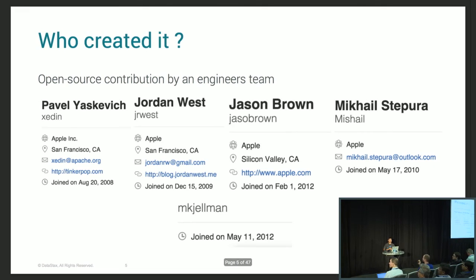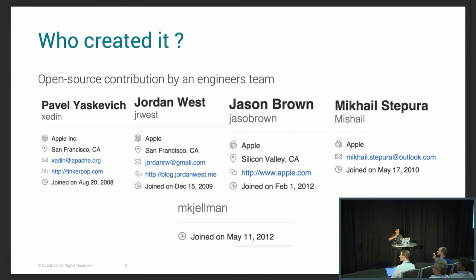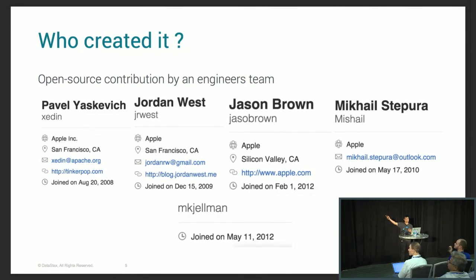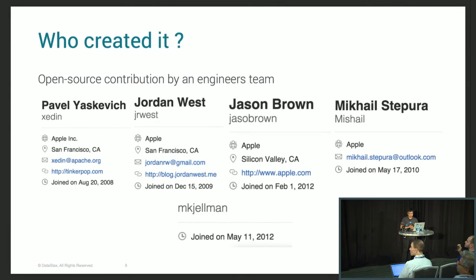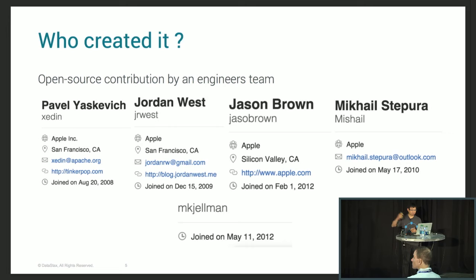Who has implemented it? We should thank this team of engineers. This is their public GitHub profile. Those people have spent a bunch of time implementing this secondary index. There are five of them.